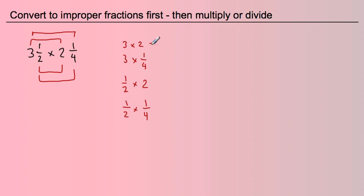3 times 2 equals 6. And then 3 times 1 fourth, that's 3 fourths. 1 half times 2 equals 1. And then 1 fourth times 1 half equals 1 eighth. And I just need to combine all these things. This needs to be converted to eighths down there, so it's 6 eighths, and now I can combine them. 6 plus 1 equals 7. 6 eighths plus 1 eighth equals 7 eighths, and that's the answer right there.